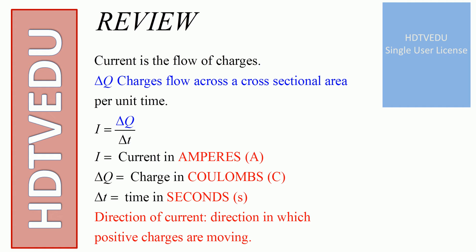We know that current is the flow of charges. Let's assume that delta Q coulombs of charges flow across a cross-sectional area per unit time. So we get I equals delta Q divided by delta t, where I is current in amperes, delta Q is charge in coulombs, and delta t is time in seconds.